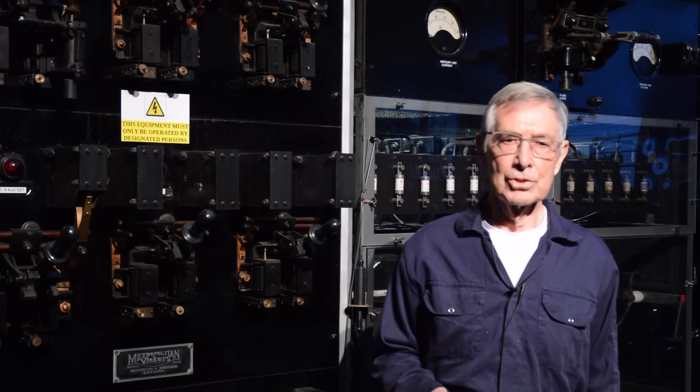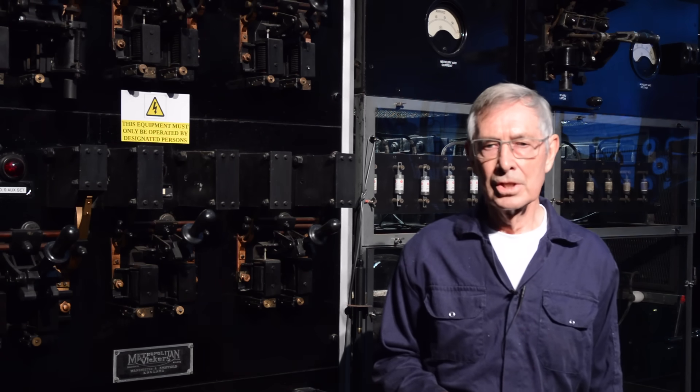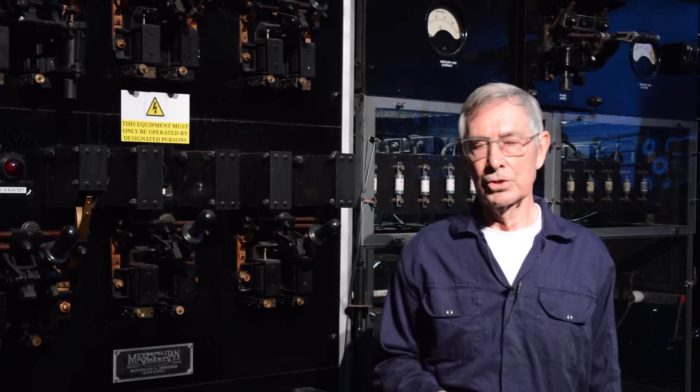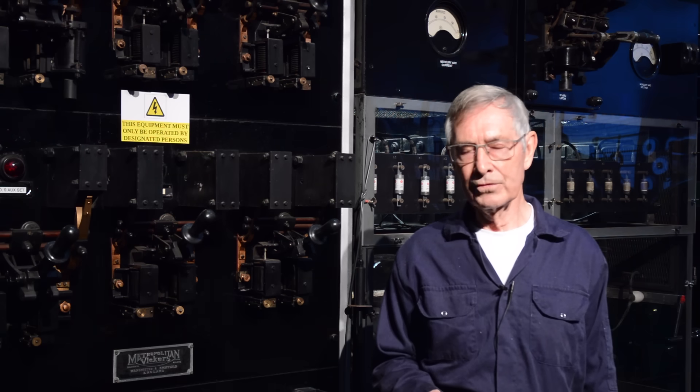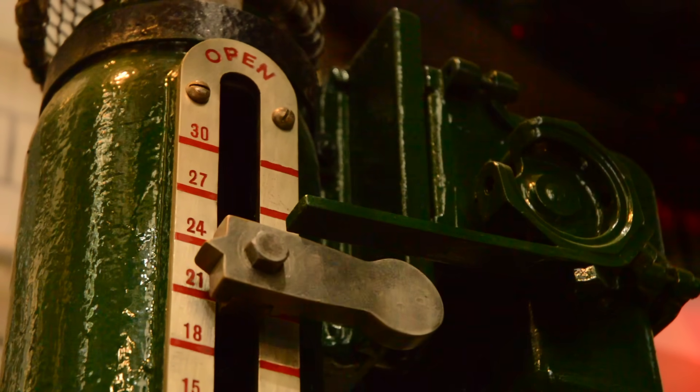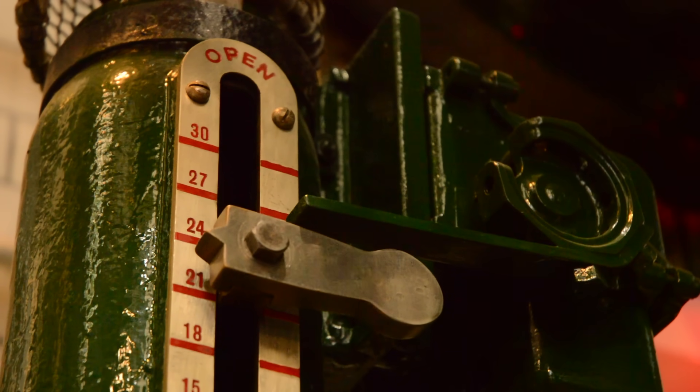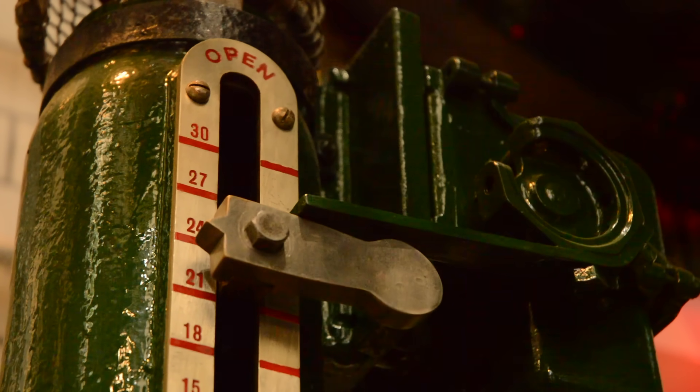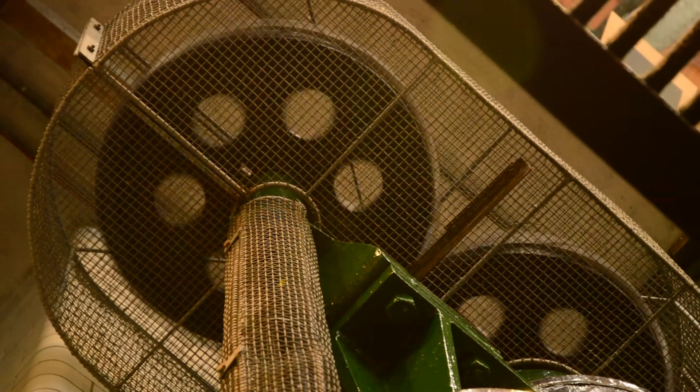When the national grid was installed in the early 1930s, this was AC voltage at around 415 volts three phase, 240 volts single phase. Faced with the choice of either replacing all the machinery or changing the AC to DC, that was the simplest option, and the technology of the day was the mercury arc rectifier.